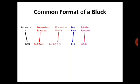Then spindle function. For rotating the spindle you have to write the spindle function. Its format is S followed by the RPM of the spindle. For example, S1500 means the spindle of that machine will rotate at 1500 RPM.